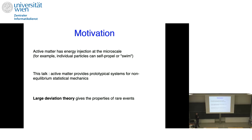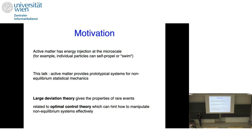Large deviation theory is in the title of the workshop. For the purposes of this talk, large deviation theory is a way of getting the probabilities and properties of rare events that occur in probabilistic systems. We might be interested because large deviation theory has this deep connection to optimal control theory, which says that if you know about rare events, maybe that can tell you how to make them happen or how to prevent them. So we always think a bit about response theory when we think about large deviations.